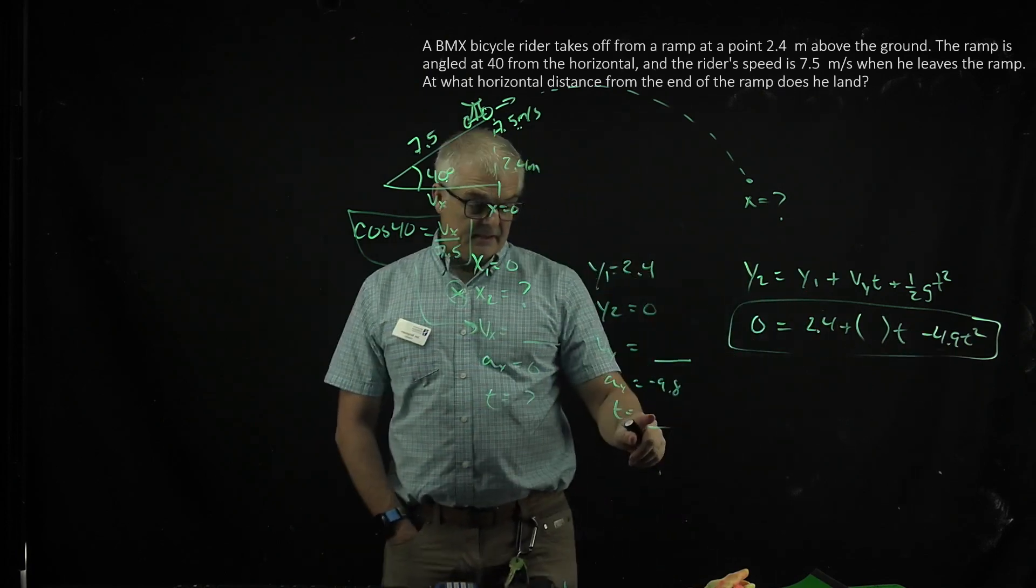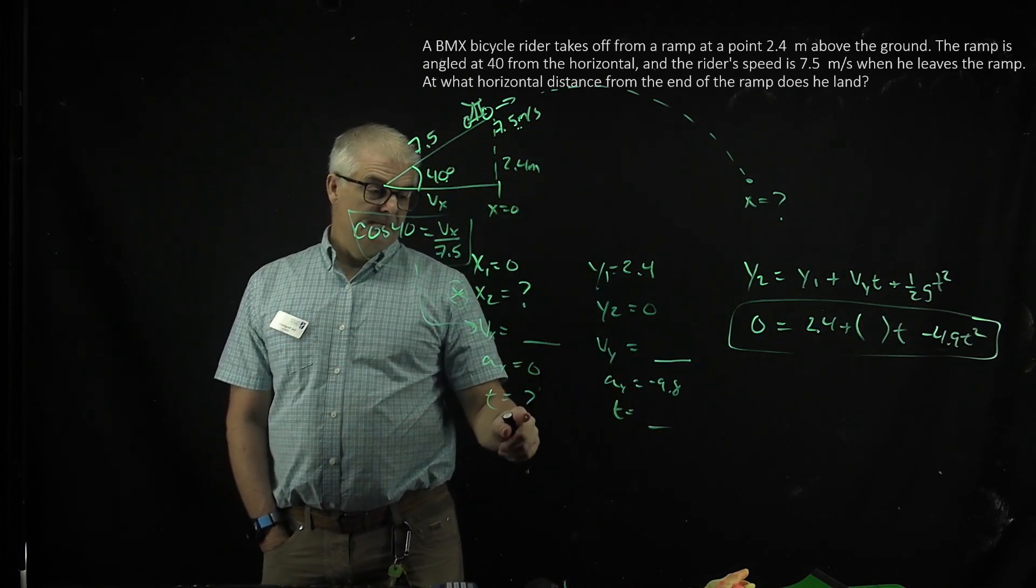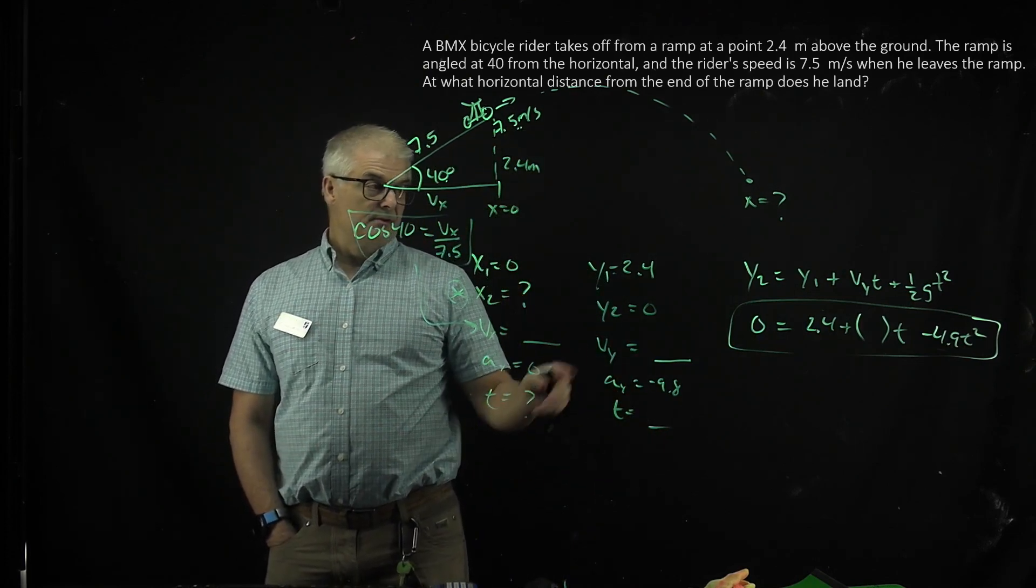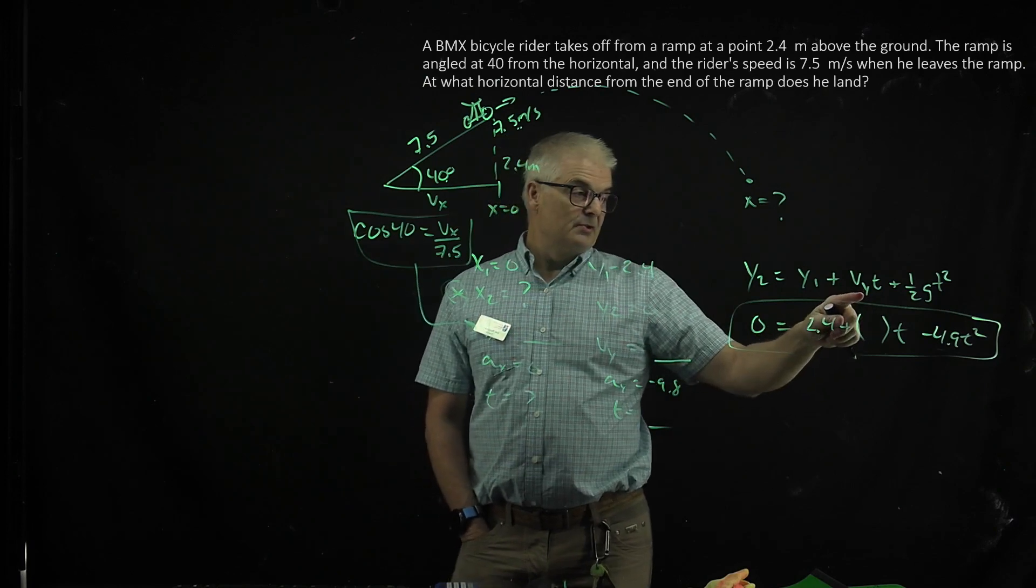That t becomes this t. Then that t gets plugged into here, and then you solve for x. You'll use the same equation, except in this case, of course, you'll know vx and t.